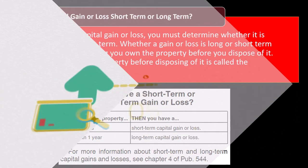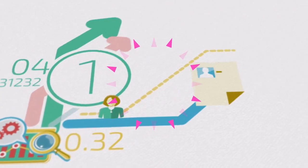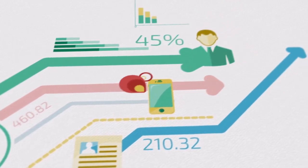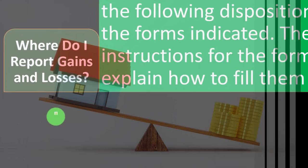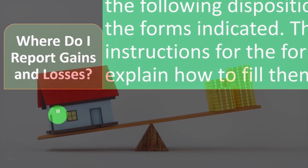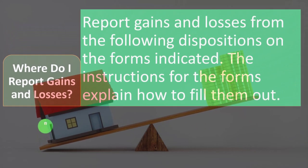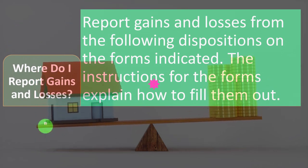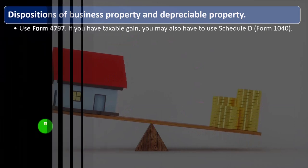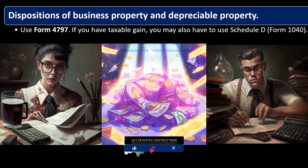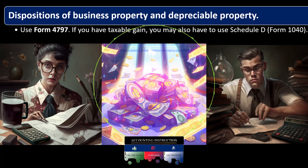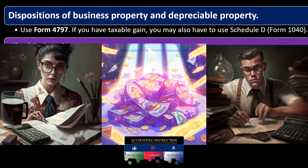People try to get things calculated at capital gains rates, which are more favorable than ordinary income rates — and that can get messy. Report gains and losses from the following dispositions on the forms indicated; the instructions for those forms explain how to fill them out. For dispositions of business property and depreciable property, use Form 4797. If you have a taxable gain, you may also have to use Schedule D — the schedule typically used for capital gains from selling stocks.